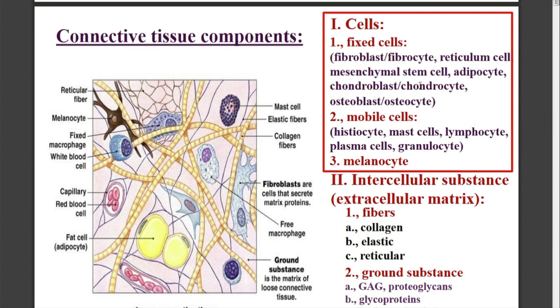Chondroblasts and chondrocytes come only in the cartilaginous tissues, and osteoblasts and osteocytes only in bone.